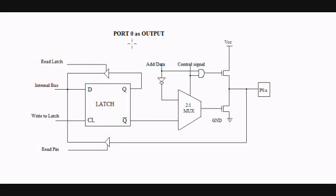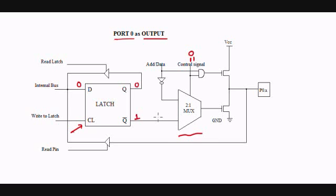Here we will see how to make port 0 as an output. When port 0 is used for output operations, a 0 has to be written onto the latch. When I enable this latch, the data is visible at the output, which is 0, and I get 1 here as the complement. The control signal has to be 0 for input-output operations, so the multiplexer will allow this signal to pass through. I get 1 here; as my control signal is 0, I get 0 here.